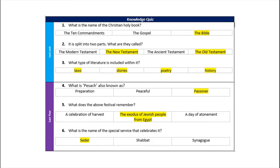The name of the Christian Holy Book is the Bible. Question two is split into two parts: the New Testament and the Old Testament. The type of literature included within it includes all of the options given — laws, stories, poetry and history. Pesach is known as Passover; the festival remembers the exodus of Jewish people from Egypt, and the name of the special service that celebrates it is Seder.